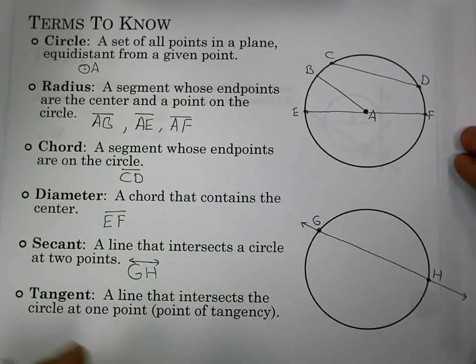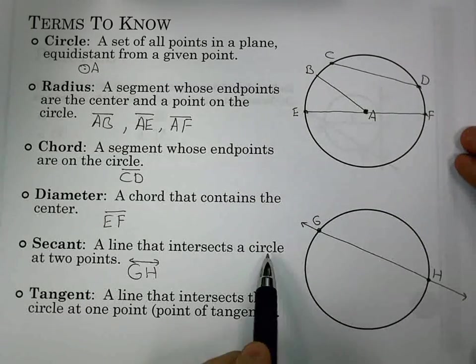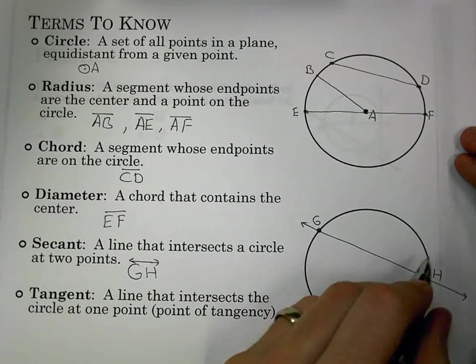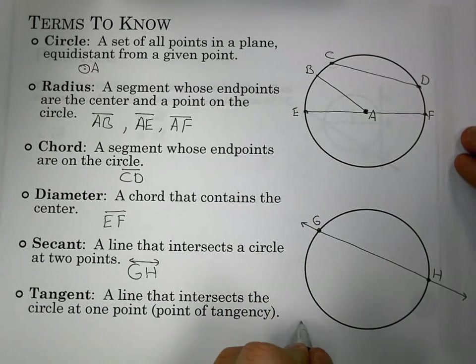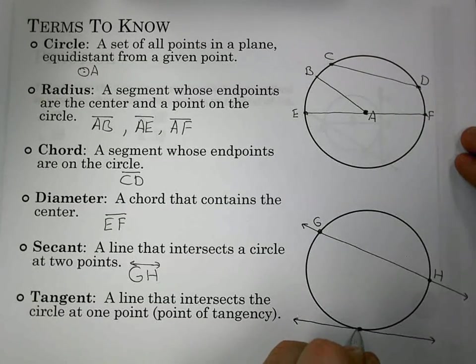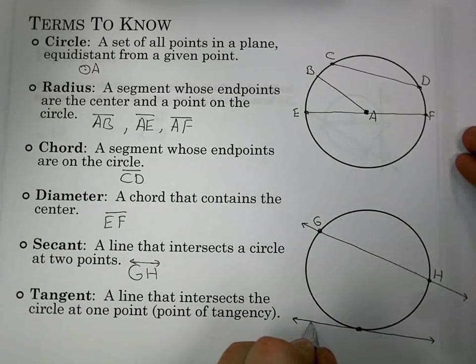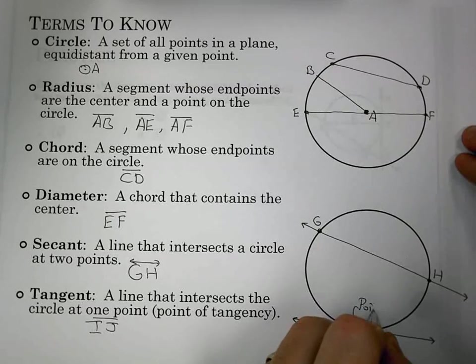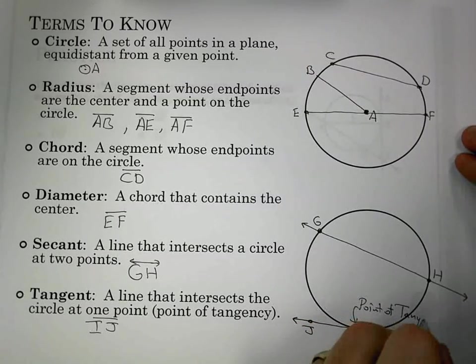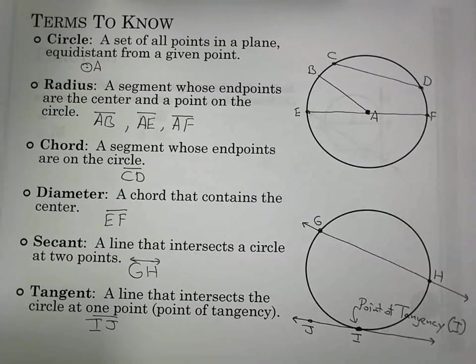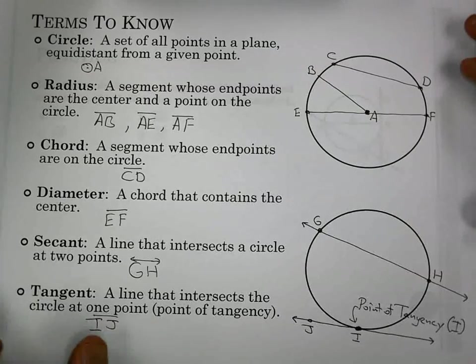A tangent is going to be a line that intersects the circle at one point. If we tried to draw a line that would intersect the circle at one point, there's a few ways we could try, but it would eventually be something that's going to go through and make it a secant, unless it comes in and hits that one point on the circle. So that's going to be our tangent. We'll give it two points here, i, j. And then we have a point of tangency to go with it. And that'll be point i. And that's just a point on the circle where the tangent hits it.